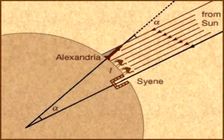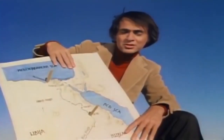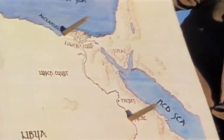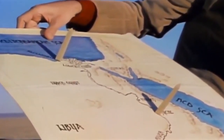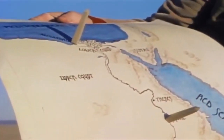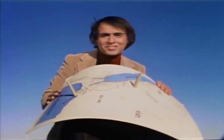Eratosthenes, Carl Sagan, and other globe proponents reason that this result is impossible on a flat earth. To quote Carl Sagan: "If at a certain moment each stick casts no shadow at all, that is perfectly easy to understand, provided the earth is flat. If the shadow at Syene is a certain length, and the shadow at Alexandria is the same length, that also makes sense on a flat earth. But how could it be," Eratosthenes asked, "that at the same instant there was no shadow at Syene, and a very substantial shadow at Alexandria?" The only answer, he claimed, was that the surface of the earth is curved.